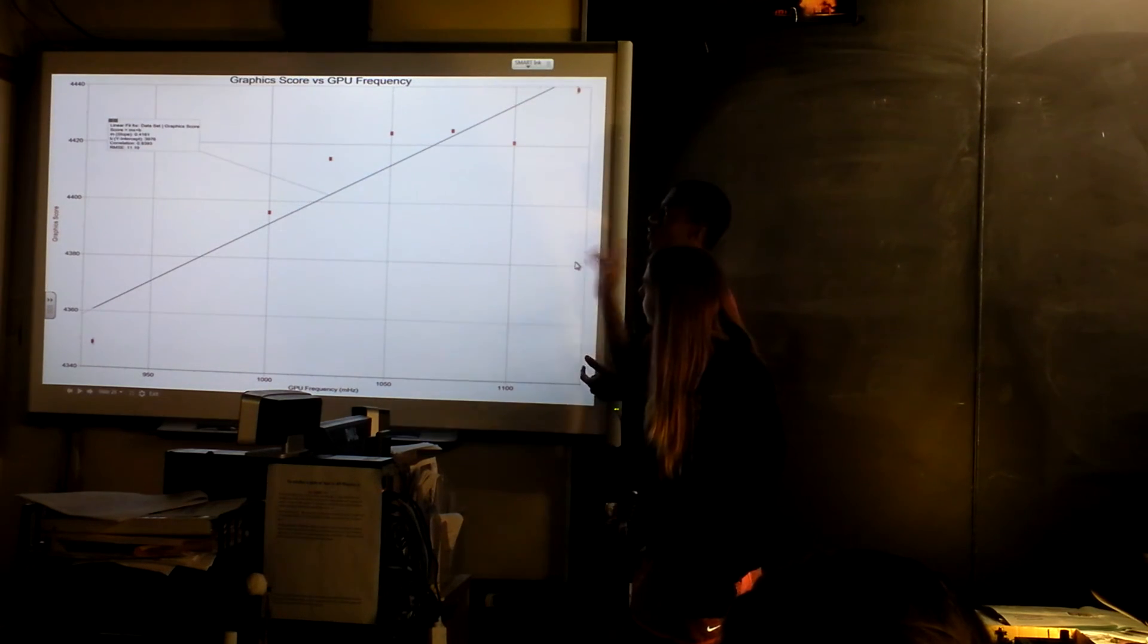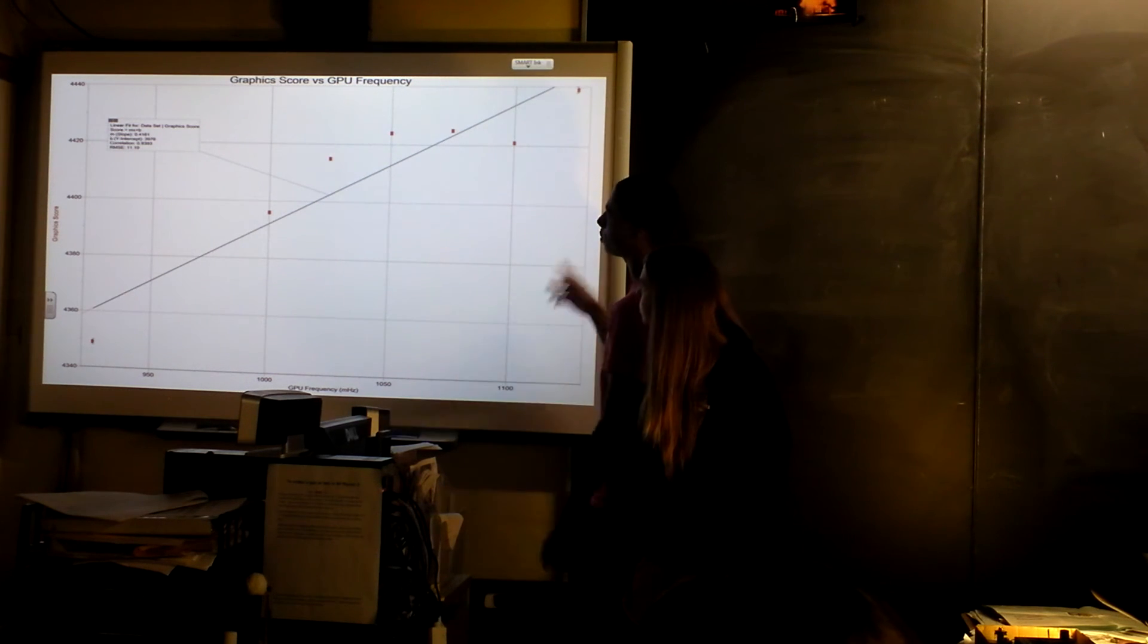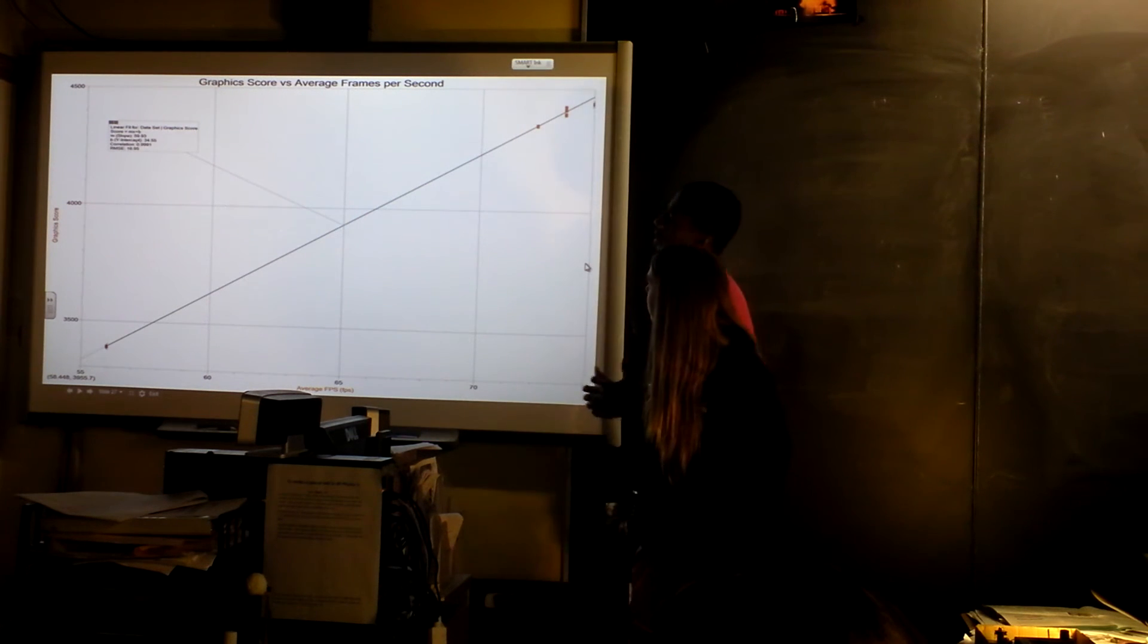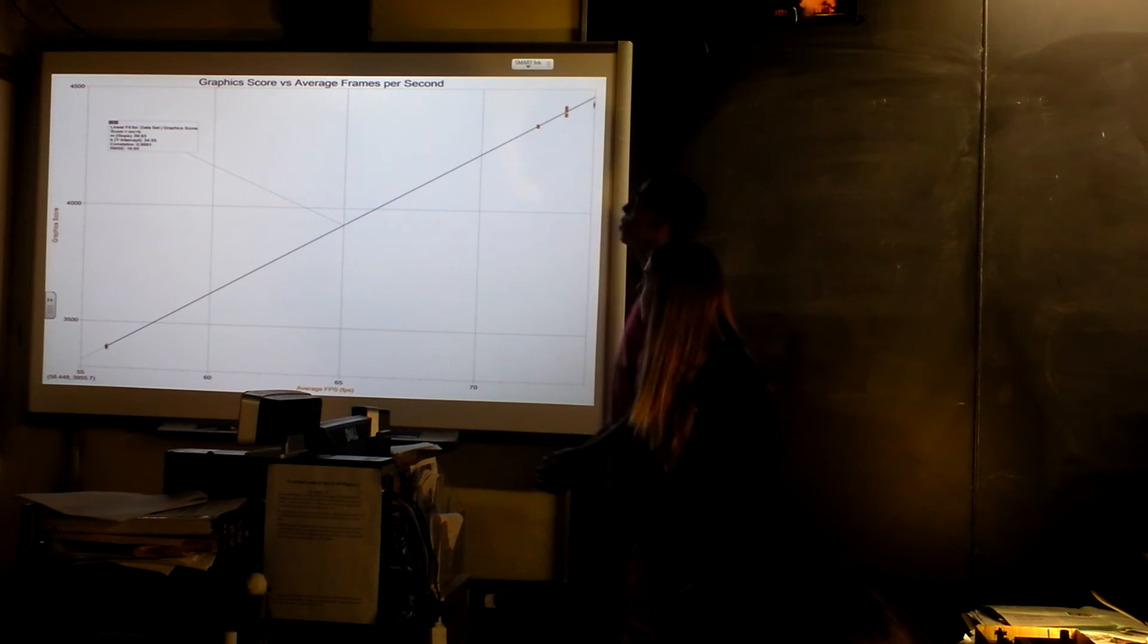And then this is the score versus frequency. Yeah, as we get higher frequencies, the score goes up in general, and this is versus frames per second, and you get roughly one score, 60 score per one frame per second.